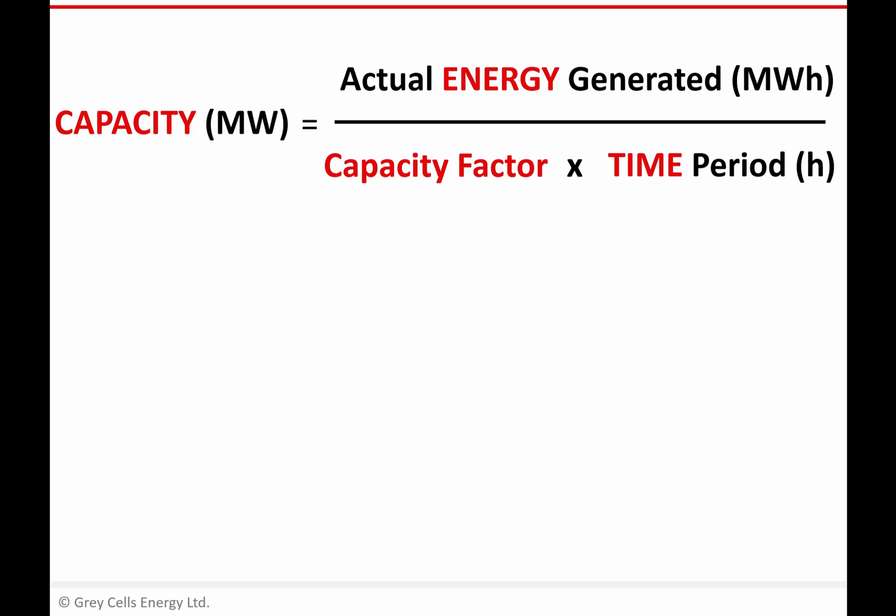Equally, I could rearrange my equation like that. Now this is saying if I know the amount of energy I'm talking about, and again I know the capacity factor or I can make some assumption about capacity factor, then I can actually use that to come up with a figure for how much capacity I would need to build to generate that amount of energy.